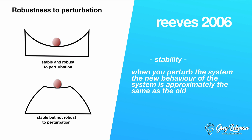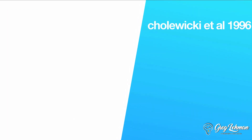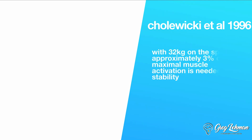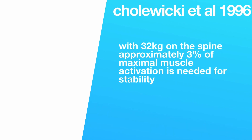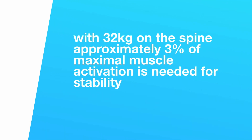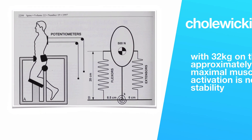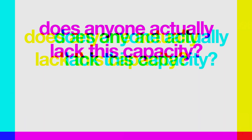Number one reason out of ten why we may not care a lot about stability and low back pain: stability is very easy to achieve. Old research from Cholewicki et al. 1996 shows that if you throw 32 kilograms on your spine, it only takes about three percent of your maximal muscle activity to stabilize the spine — both flexors and extensors. You just don't need a lot of force to have a stable spine. So who actually lacks the ability to stabilize their spine?